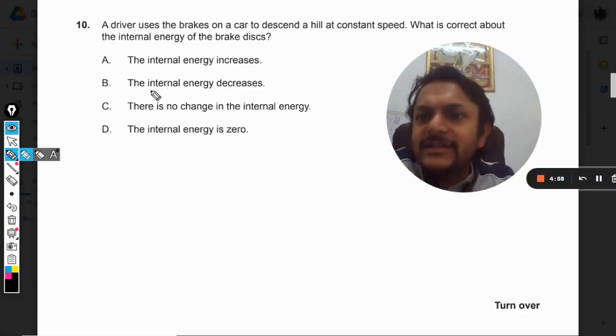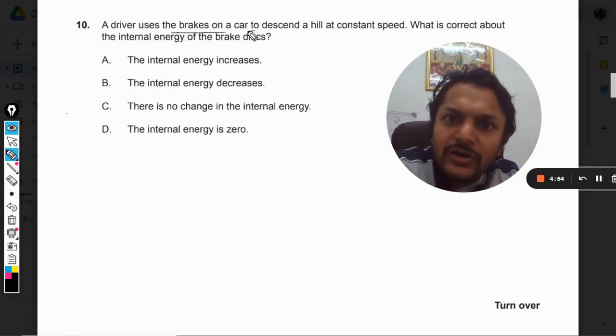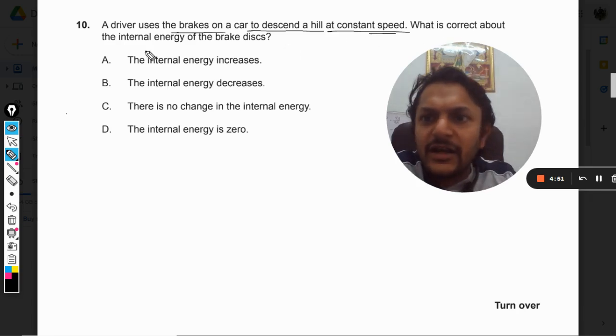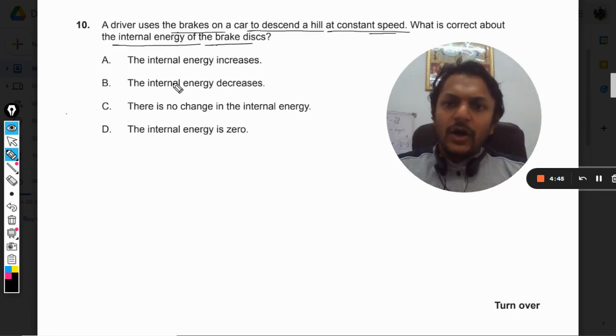Okay, dear students, let's see what's in this question. A driver uses brakes on a car to descend a hill at constant speed. What is correct about the internal energy of the brake discs?